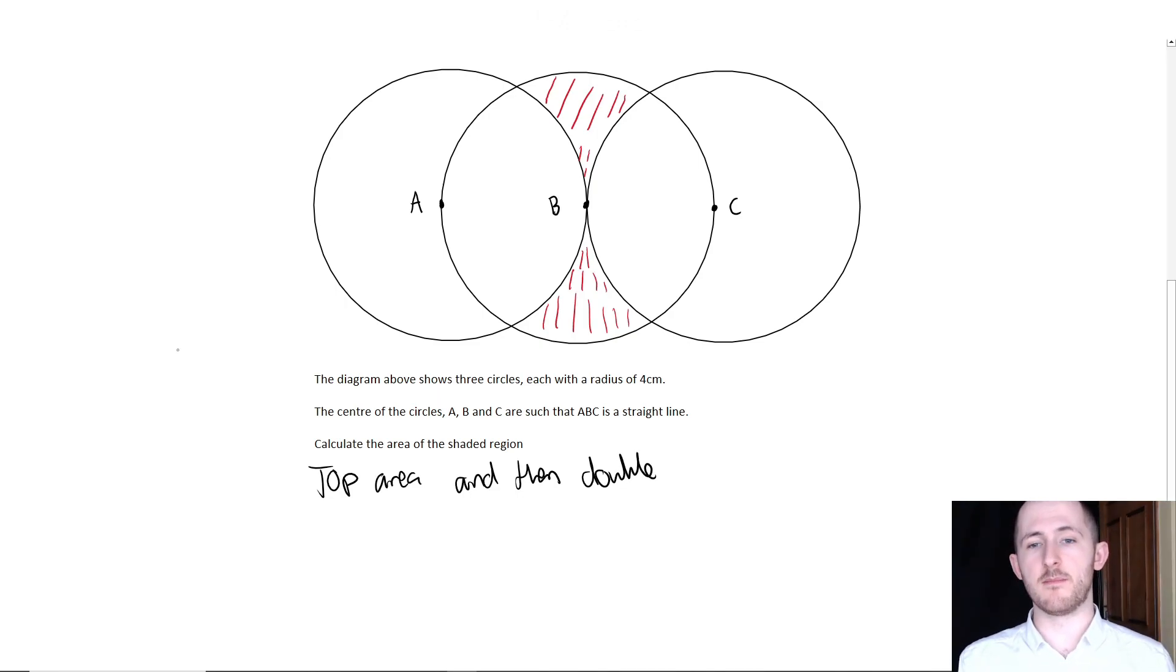We're going to do a bit of a big brain move. We're going to draw two equilateral triangles by drawing a line from the center of one circle to the edge of that same circle. Can you see that all of these are going to be the radius of four centimeters?